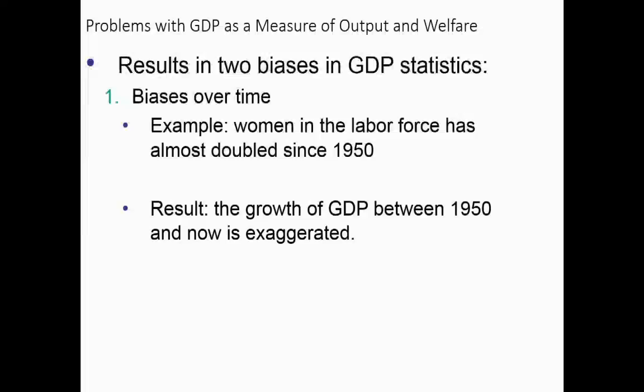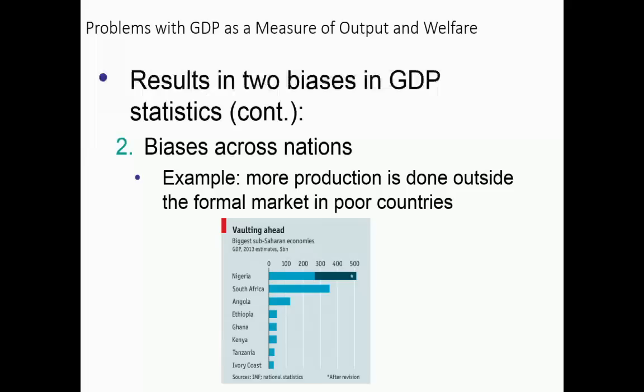You get the same bias between countries. In a largely agrarian country like Nigeria, a lot of production is done off the books or at home. Someone working on the farm with family members — as far as the government is concerned, none of that production happens and it's not counted toward GDP. This makes developing countries seem even poorer than they actually are, because a lot of their production just doesn't make it into the numbers.